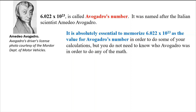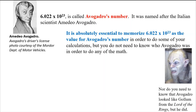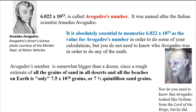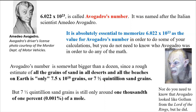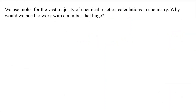It is absolutely essential to have Avogadro's number memorized — you will be dead in the water if you don't. To give you an idea of how big it is: all the grains of sand on all the deserts and beaches on Earth have been estimated at only 7.5 times 10 to the 18th — that's only one thousandth of one percent of a mole.